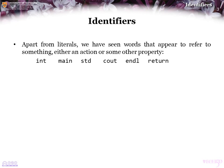Apart from the literals and the other various symbols on the keyboard, we've seen words appearing in our code that appear to refer to something, either in an action or perhaps performing some sort of operation. These include int, main, standard, cout or console out, end of line, and return. Such symbols are called identifiers.